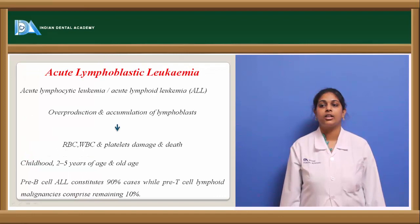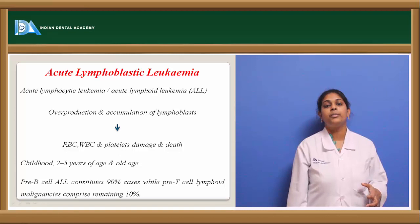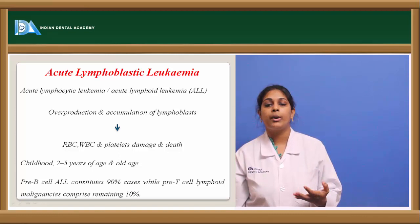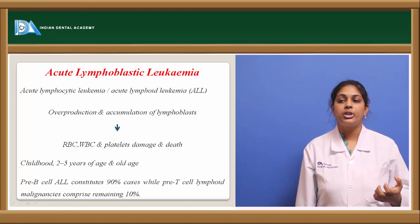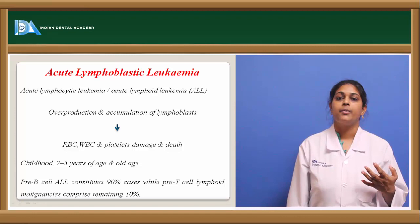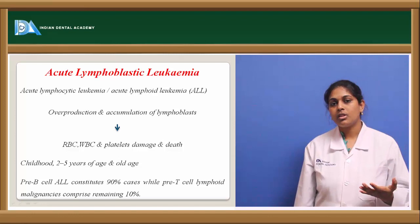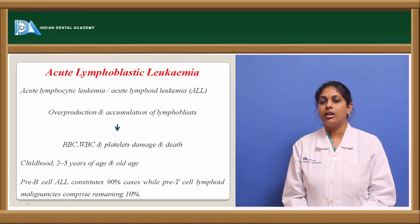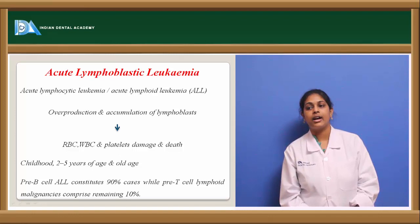Acute lymphoblastic leukemia, also termed acute lymphocytic leukemia or acute lymphoid leukemia, has its major underlying defect in overproduction or accumulation of lymphoblast cells, which causes damage to RBCs, granulocytes, and platelets. It is most commonly seen in children under 2 to 5 years of age and in elderly people. Pre-B cell ALL constitutes 90% of cases, while pre-T cell lymphoid malignancies comprise the remaining 10%.